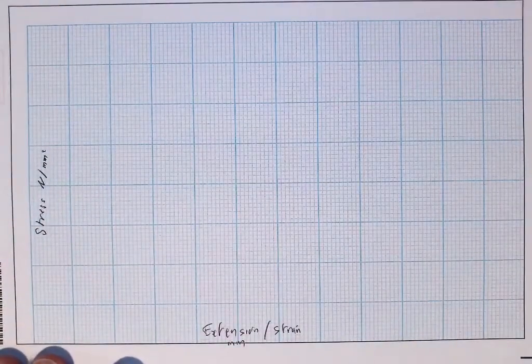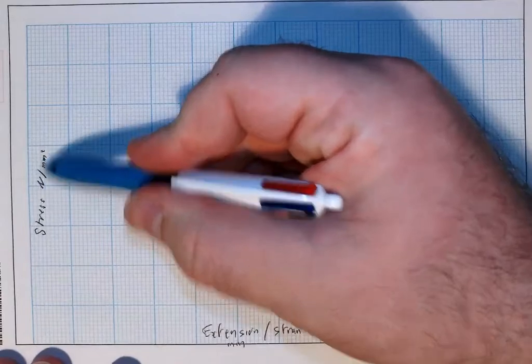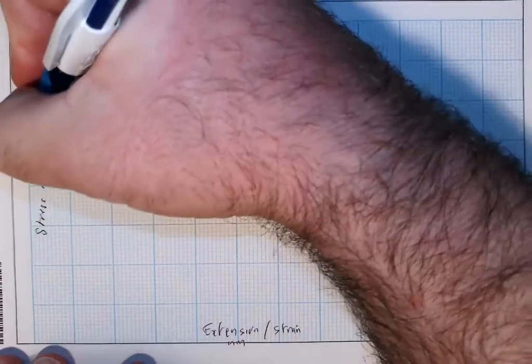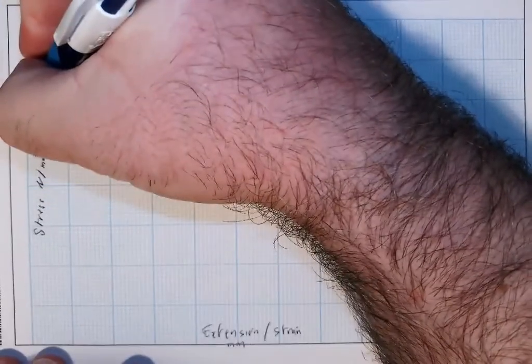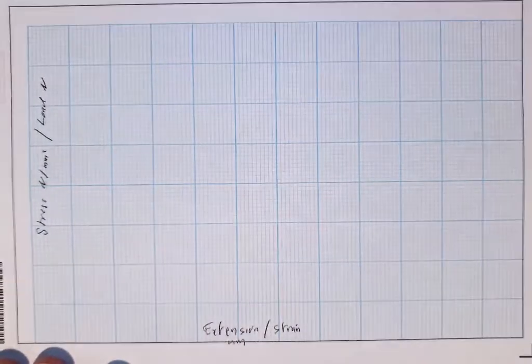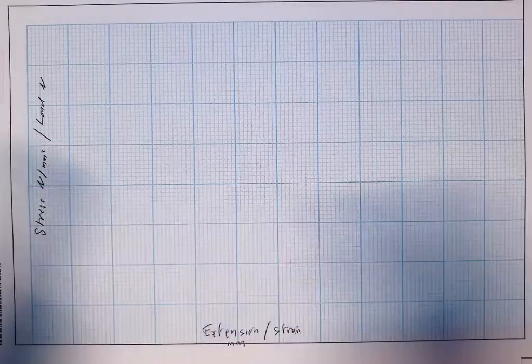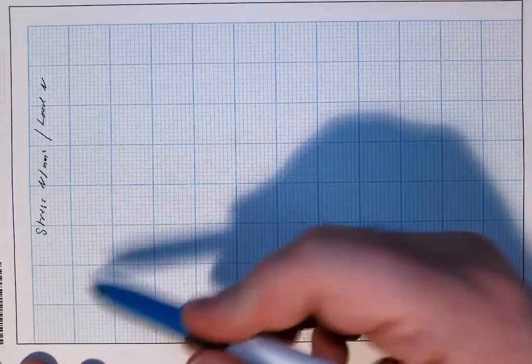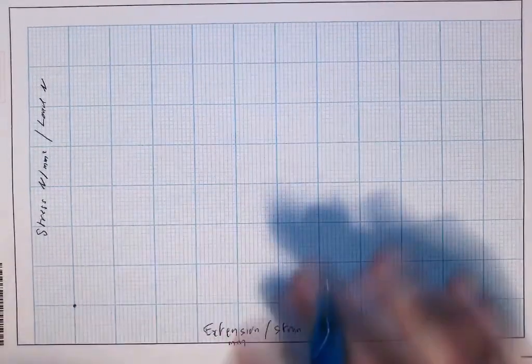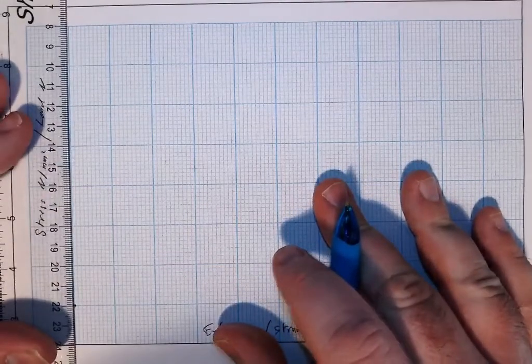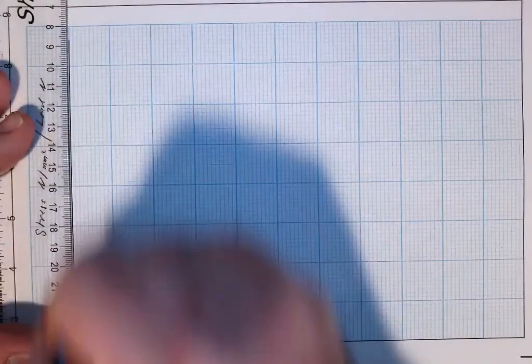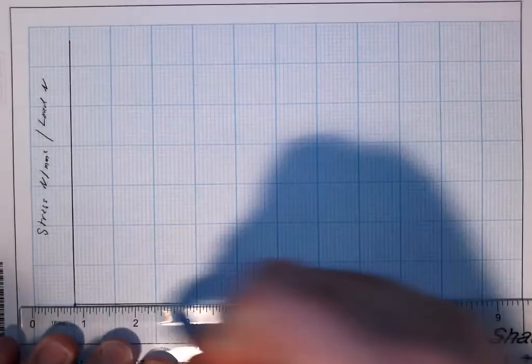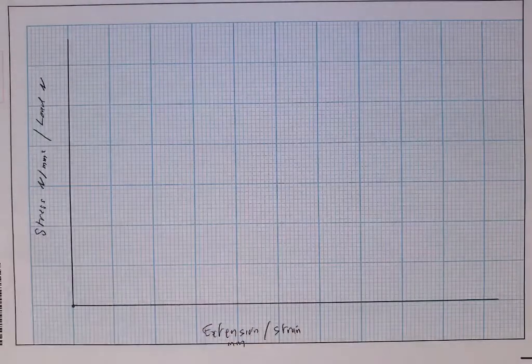Depending on the material and the graph this may be kilonewtons per millimeter squared but that has no effect on how this question is answered. Sometimes you will see a load extension diagram and the load is measured in newtons or kilonewtons. I typically draw this diagram in landscape format where the extension goes along the long edge of the paper and the stress goes up the short end. So I'm going to start at this point here and draw my two axes. There's my stress axis and there is my strain axis.